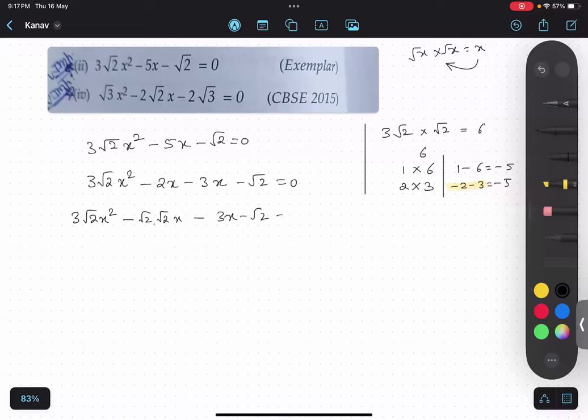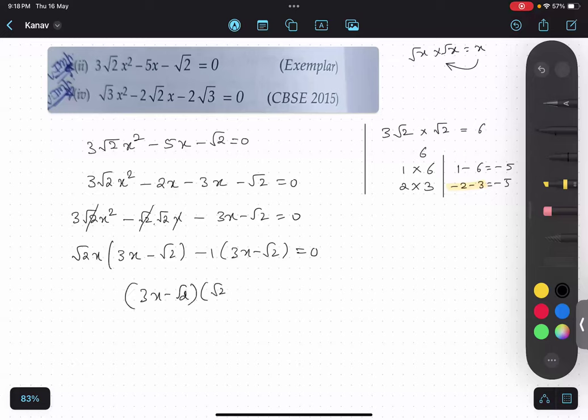3x minus root 2 equals to 0. Now, root 2 x common, root 2, root 2 cancel, x, x common. So 3x minus x, root 2 is common. Over here minus 1 common, 3x minus root 2 equals to 0. So 3x minus root 2 and root 2 x minus 1 equals to 0 is the answer.